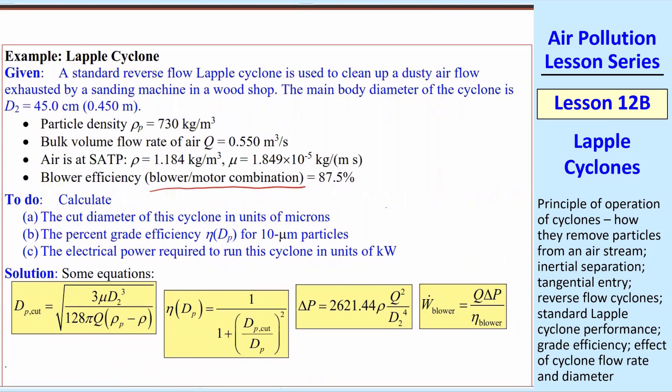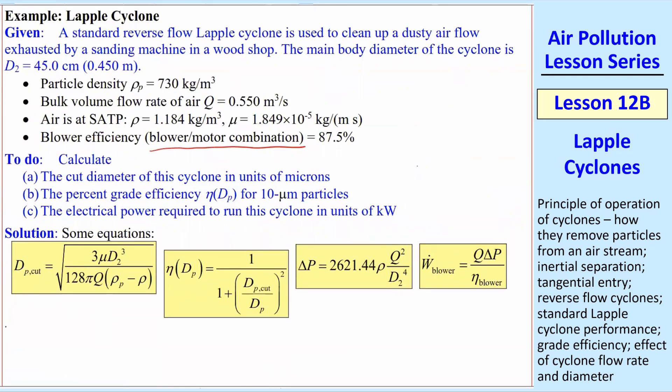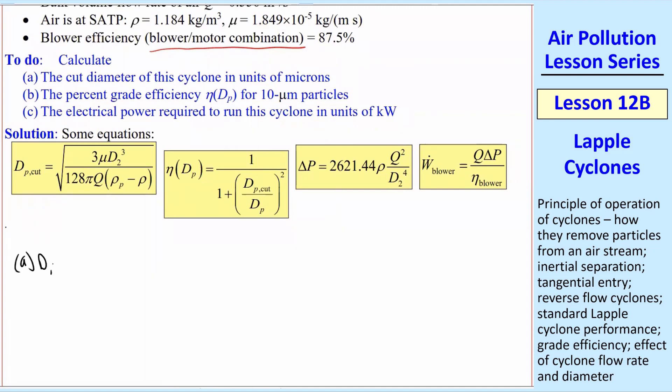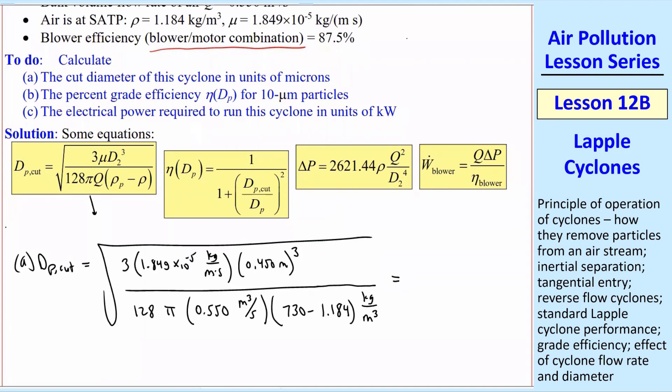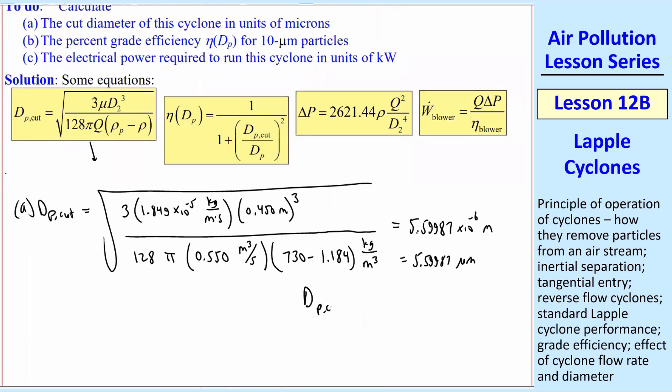We want to calculate three things: the cut diameter, the percent grade efficiency for 10 micron particles, and then the electrical power required to run that. So that would include the blower and the motor together as a unit, which is typically what we do. Let's do this analysis. DP_cut equal, I plugged in all the numbers and their units. It turns out that all the units cancel out properly. We get meters. I get 5.59987 times 10 to the minus 6 meters, or 5.59987 microns. So my answer would be to three digits, 5.60 microns. But we use this whole thing for subsequent equations to reduce roundoff error.